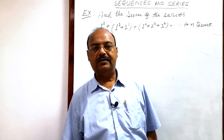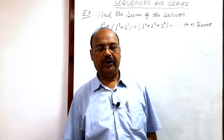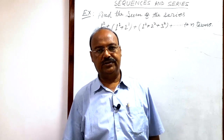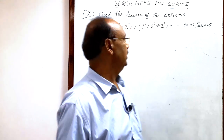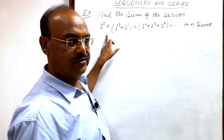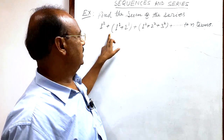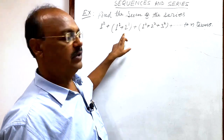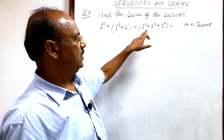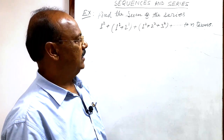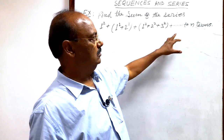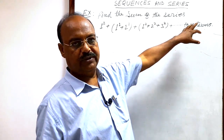Here we will see a very interesting and important question from the topic sequence and series. The question is: find the sum of the series 1² plus (1² + 2²) plus (1² + 2² + 3²) and so on up to n terms.